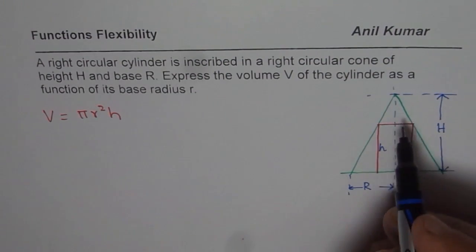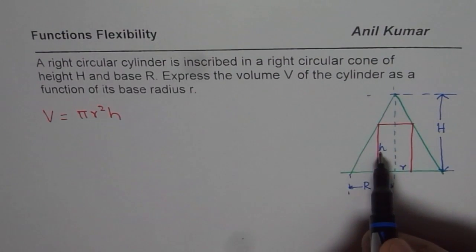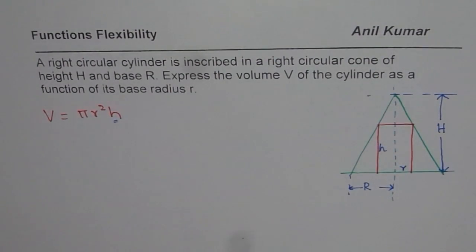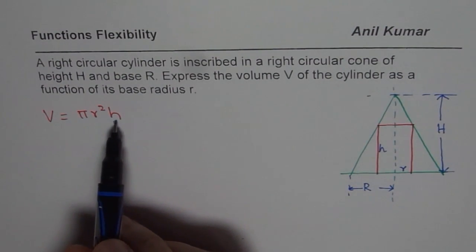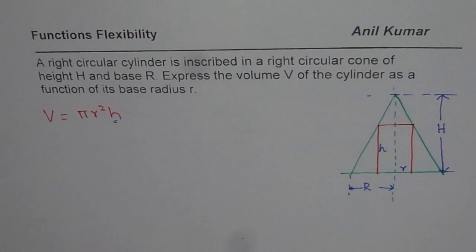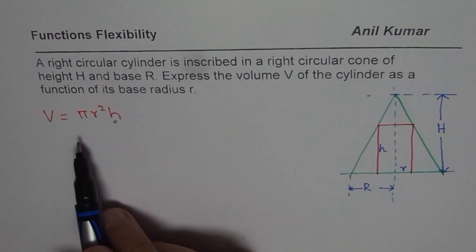To relate the volume in terms of r, we really mean we have to get rid of h from here. That is what we mean. We want only one variable. At present, we are writing this formula in terms of two variables. To explore further the volume, especially in the cases when we need to maximize volume or something like that with respect to the dimensions within the cone, in that case it is required that we write a function in terms of just one variable.